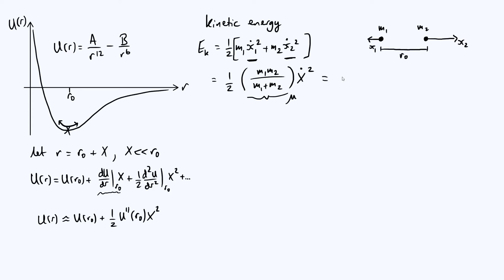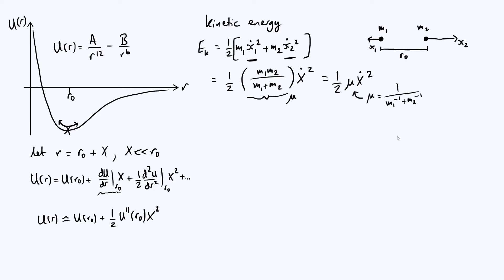We define the reduced mass μ = m₁m₂/(m₁+m₂), so the kinetic energy is simply Eₖ = ½μẊ². This reduced mass acts as an effective mass for the oscillations of the diatomic molecule — it has the same form as the classical ½mv². Equivalently, the reduced mass can be written as 1/μ = 1/m₁ + 1/m₂; adding the reciprocals of the individual masses gives the reciprocal of the reduced mass.